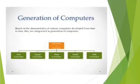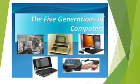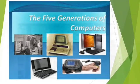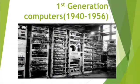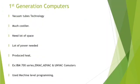This is the first generation of computers, starting from 1942 to 1956. These computers were made using vacuum tubes and are identified as first generation computers. They were much costlier and occupied a lot of space. They consumed a lot of power and produced a lot of heat. The first generation computers also had low capacity to store data.